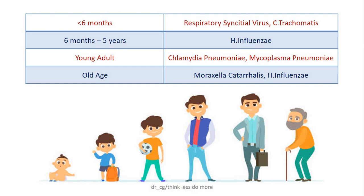First of all, see age-wise. In infants less than 6 months, common infections are RSV or Chlamydia trachomatis. Then up to 5 years of age, Haemophilus influenzae infection is very common. In young adults, commonly infected by Mycoplasma or Chlamydia. And among old patients, infections by Moraxella and influenza are possible.